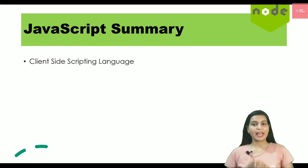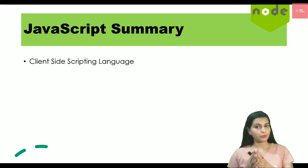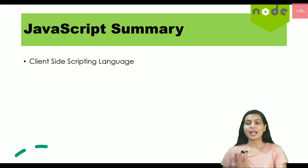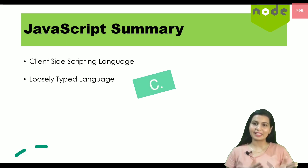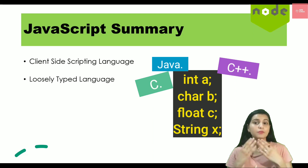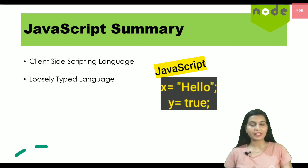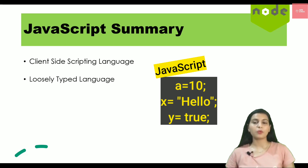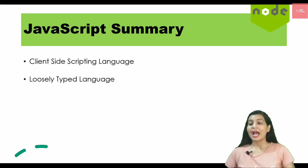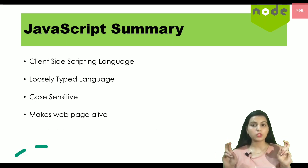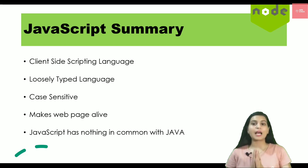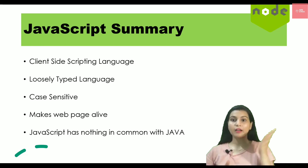JavaScript is an object-oriented and client-side language. It is also a loosely typed language, meaning you don't need to declare a variable's data type like you would in C, C++, or Java. It is case-sensitive and makes your web page come alive. One important thing to note is that JavaScript has nothing to do with Java — comparing them is simply like comparing a car with a carpet.